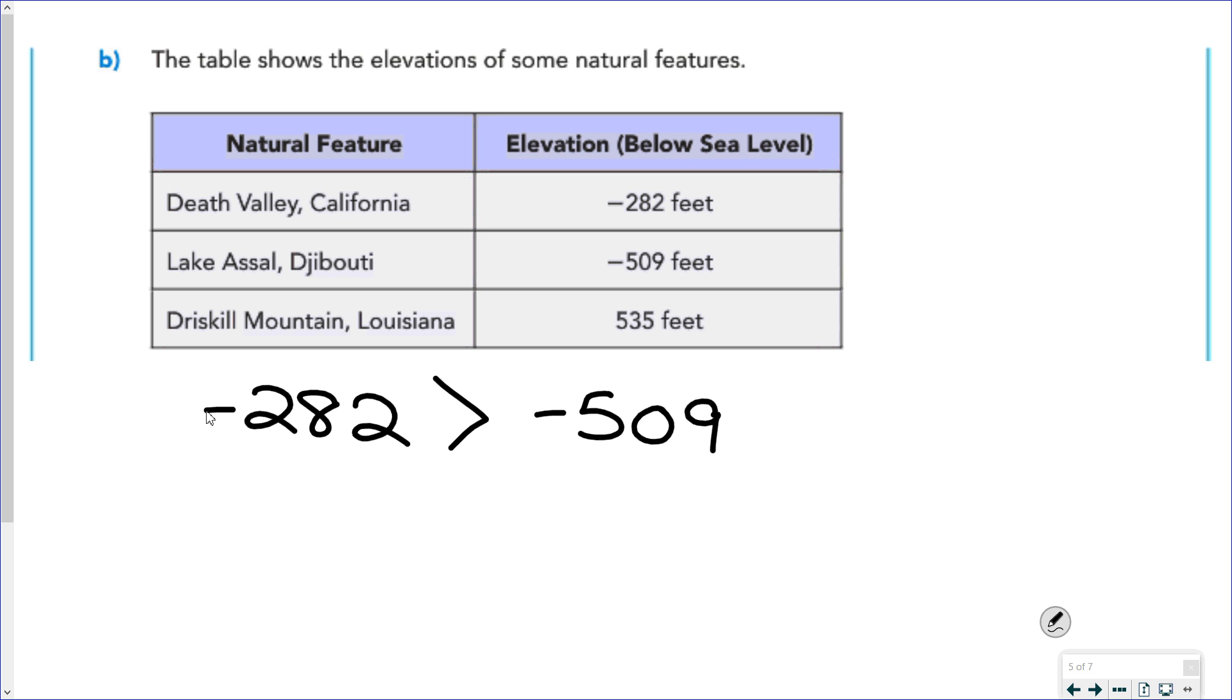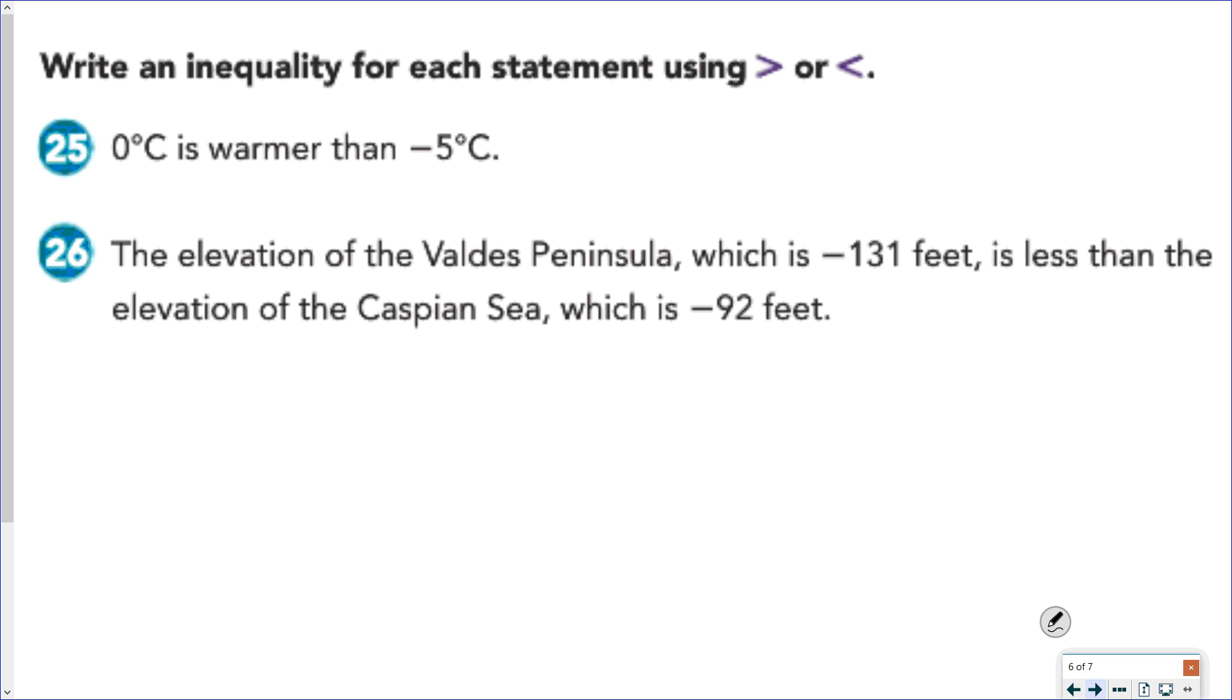One other answer that I would accept for the inequality would be if you started with the elevation of Lake Assault, and then put the elevation of Death Valley afterwards, and then negative 509 is less than negative 282. But there will be situations where I am not accepting multiple answers, and it's based on what the situation is.